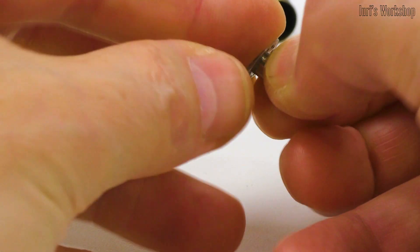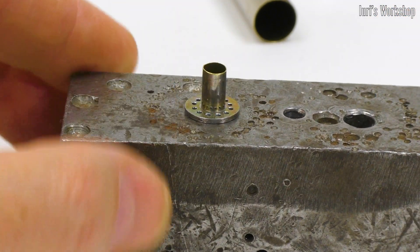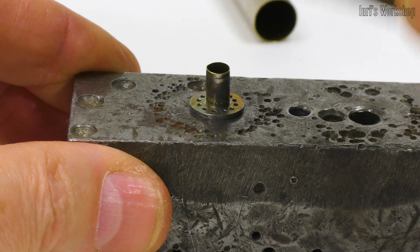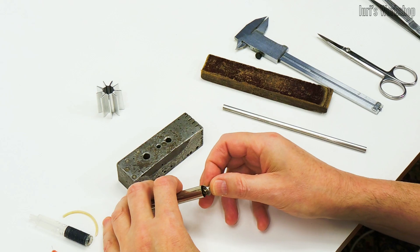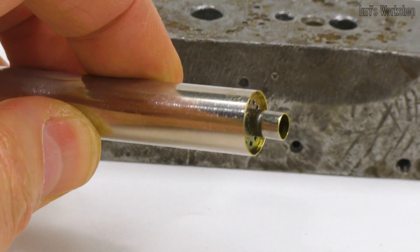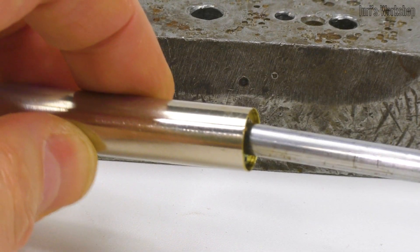Press the tube into the washer and our nozzle is ready. I used one of the antenna sections to press the nozzle into the burner body.